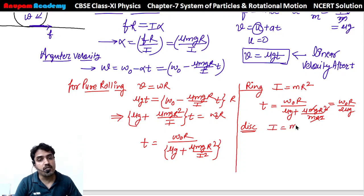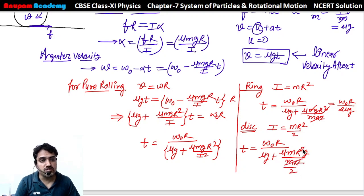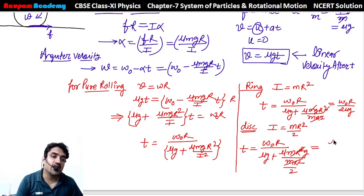Agar disk ke liye baat karayein - I ka value hota hai mr²/2. So time = omega₀·r / [mu·g + mu·mg·r² / (mr²/2)] = omega₀·r / [mu·g + 2·mu·g] = omega₀·r / (3·mu·g). So t_disk = omega₀·r / (3·mu·g).